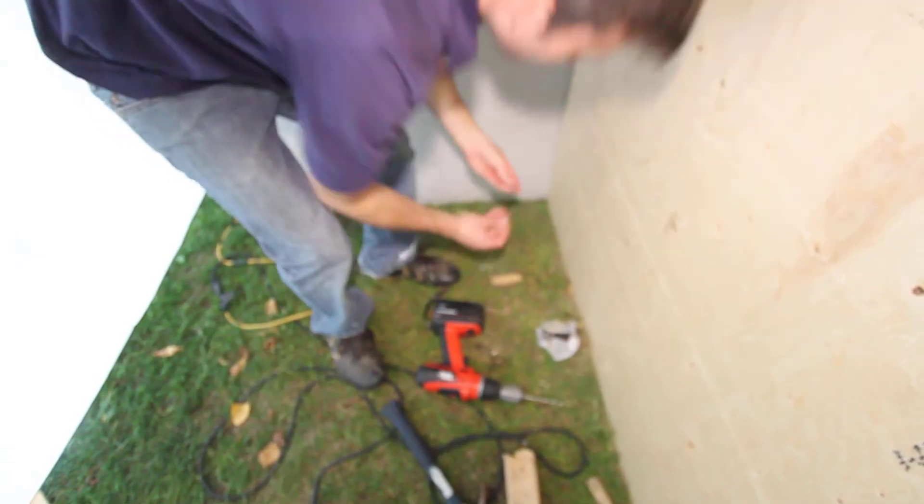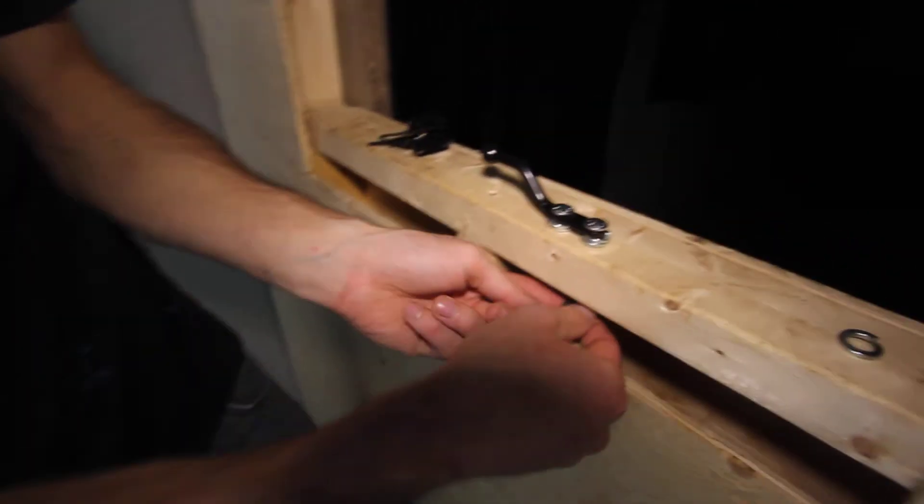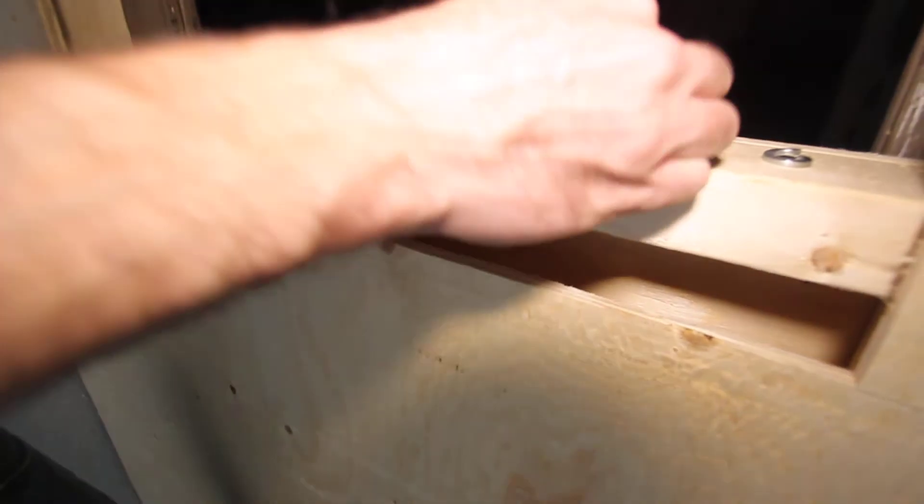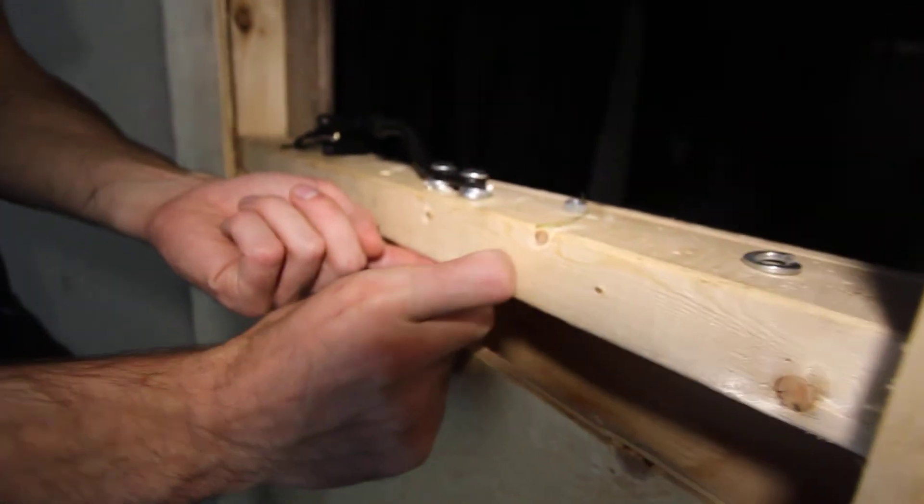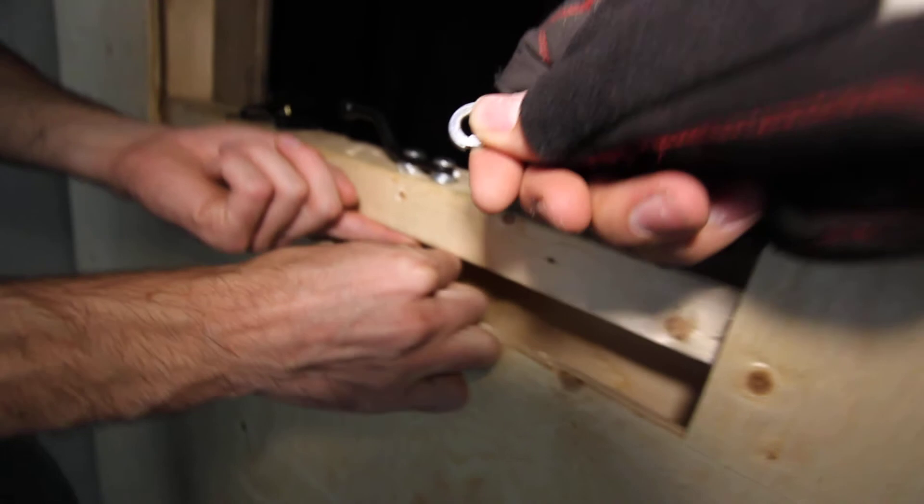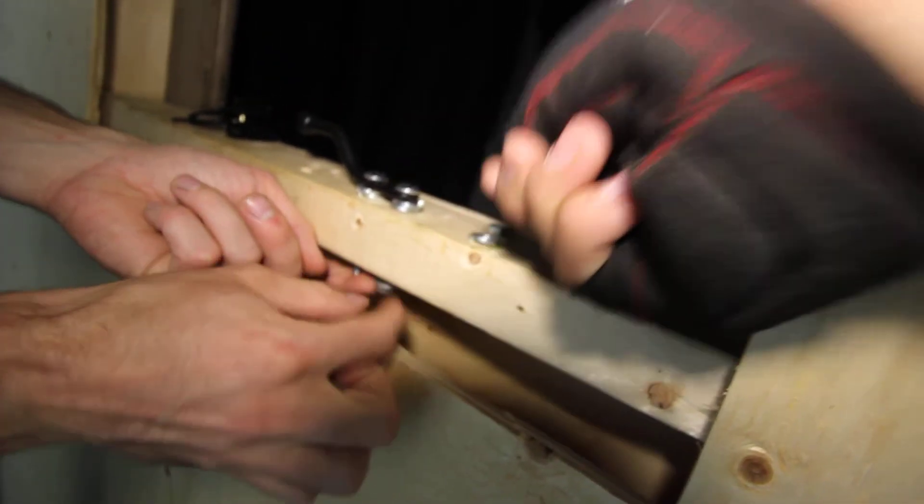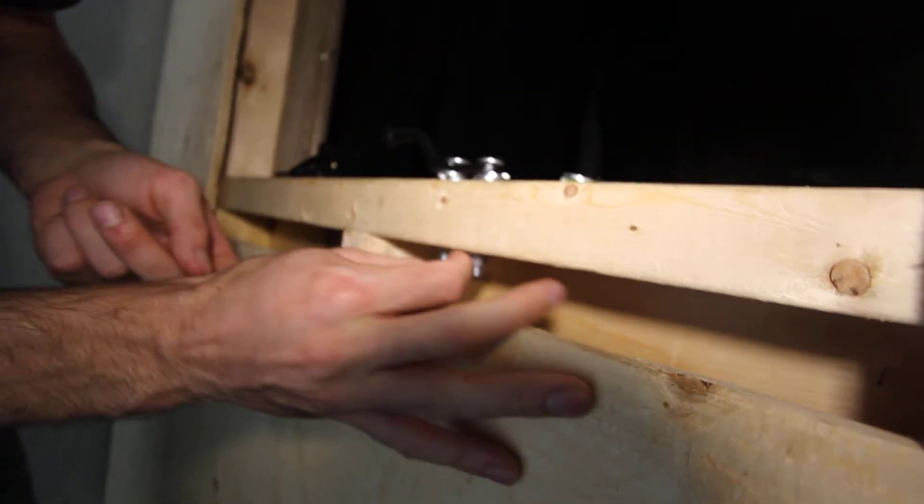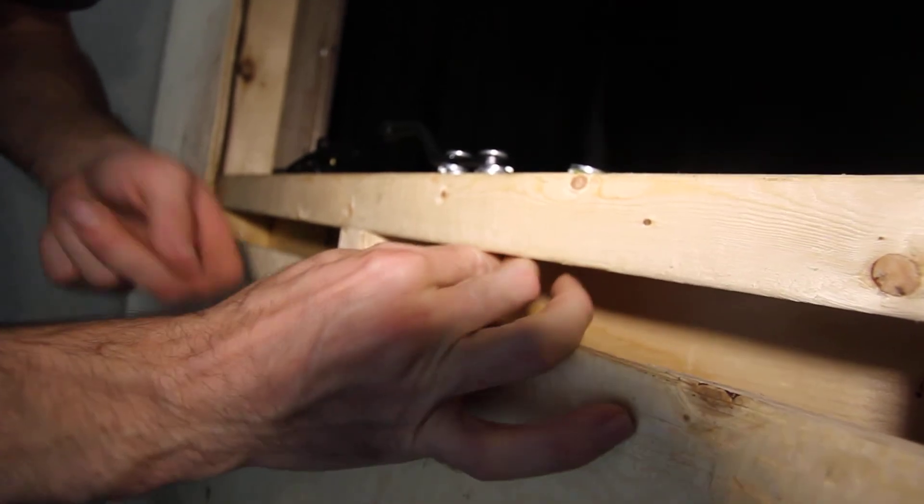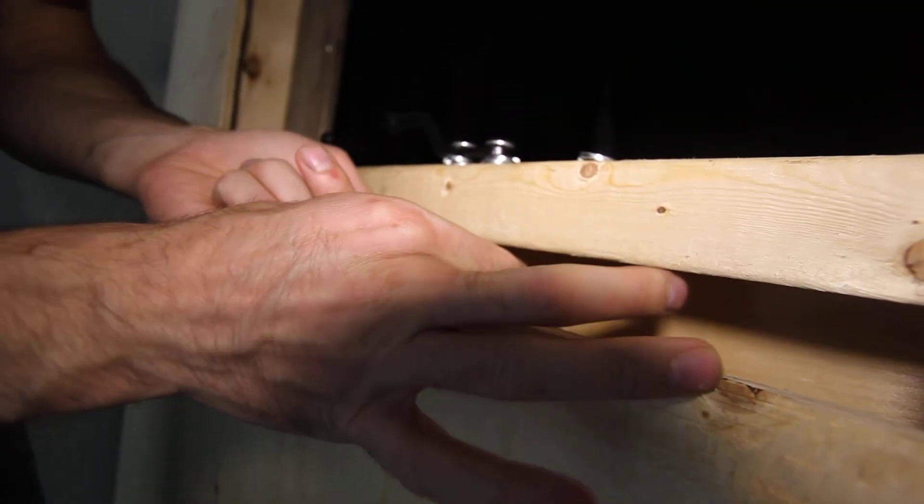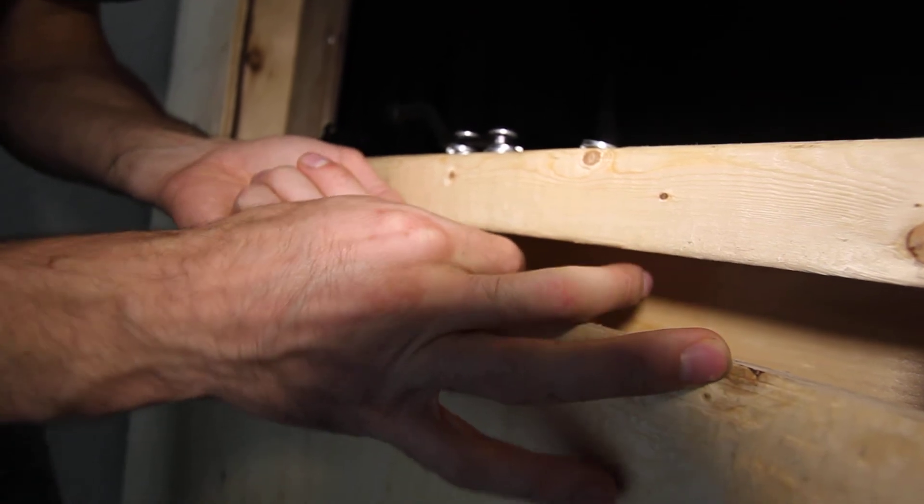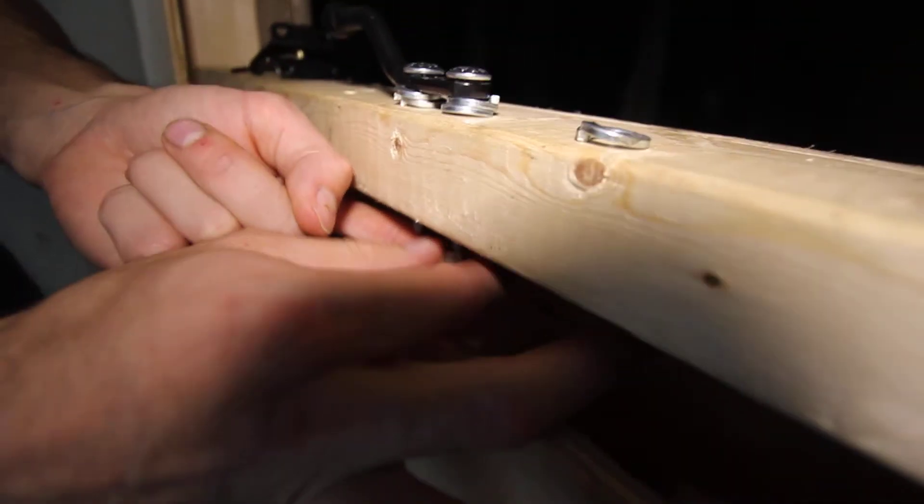On the bottom, I would suggest when you're putting the nuts on, use locking nuts. Or if they don't have them - in my case they didn't have them at the hardware store - you can tighten these up and to make it lock, once you tighten that one up, you put a second nut on it and that generally does the trick. It'll lock it up.